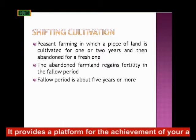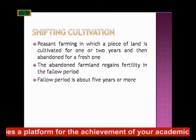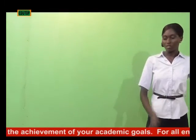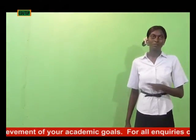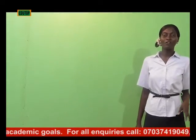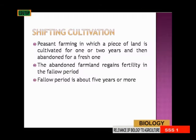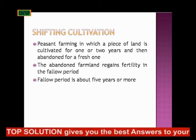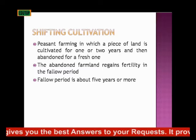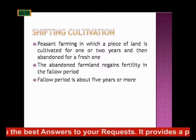The abandoned farmland regains fertility in the fallow period. It's like asking the land to go on vacation — nothing is planted on it for some years. The fallow period is about five years or more. And as I was explaining with crop rotation, crop rotation helps prevent land disputes that result from shifting cultivation, because if you don't do anything on your land for four to five years, somebody else might have encroached on it.